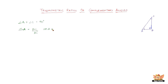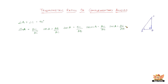Cos A equals adjacent by hypotenuse. Adjacent is AB and hypotenuse is AC, so cos A equals AB over AC. Tan A is opposite by adjacent, so that's BC over AB. The reciprocal functions: cosecant A is 1 over sine, which is AC over BC. Secant A is 1 over cos, which is AC over AB. Cot A is the reciprocal of tan, so that's AB over BC.